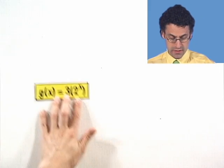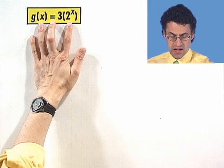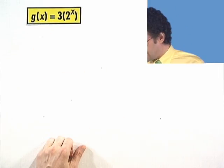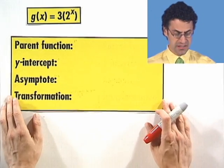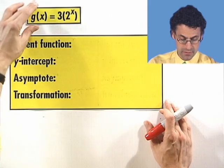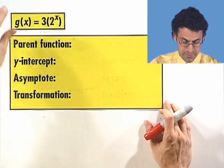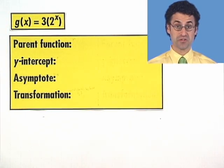The first one, g of x equals 3 times 2 to the x. And I want us to identify a few key features. First, let's figure out the parent function. And then let's figure out the intercept, the asymptote, and the transformation.